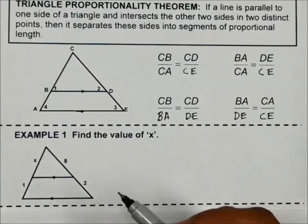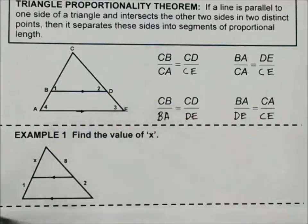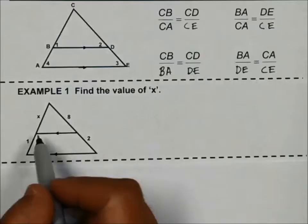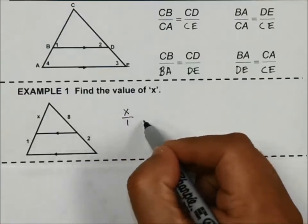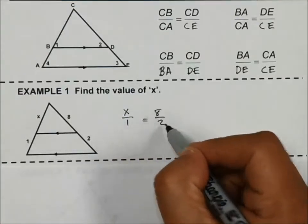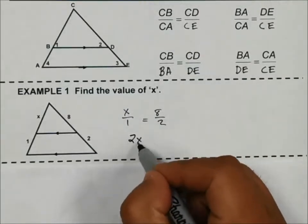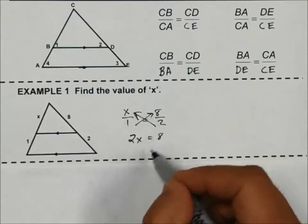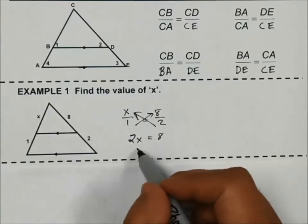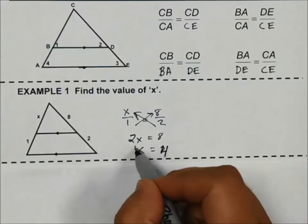I have X over 1 on this side and 8 over 2 on the other side. This parallel line right here sets up the proportions. It's going to be X over 1 equals 8 over 2. Then we cross multiply, so that gives me 2X, and then 1 times 8 is 8, and then divide by 2, X is 4.